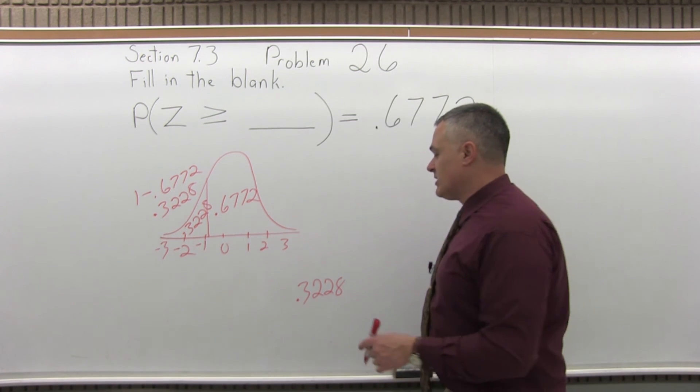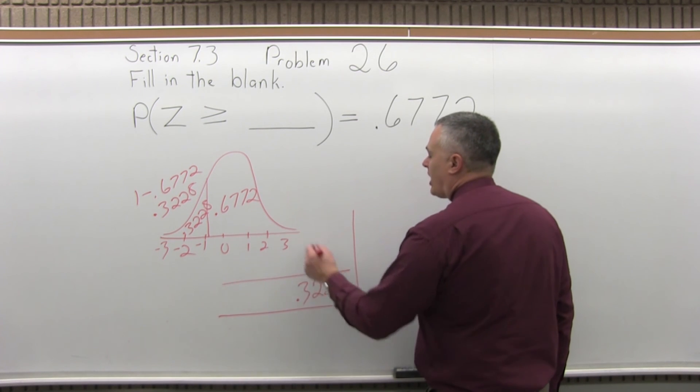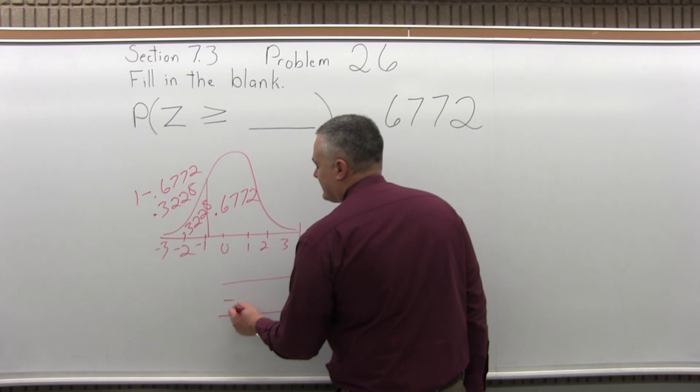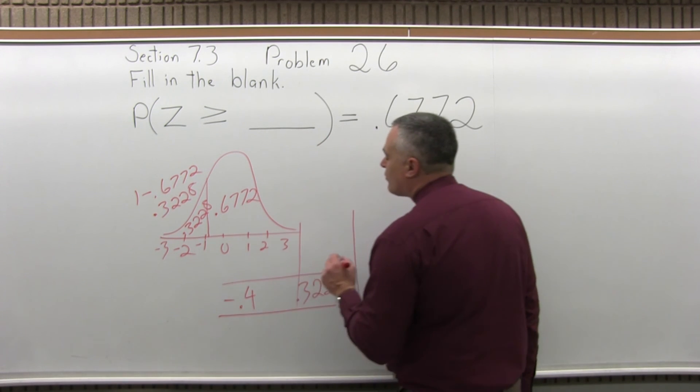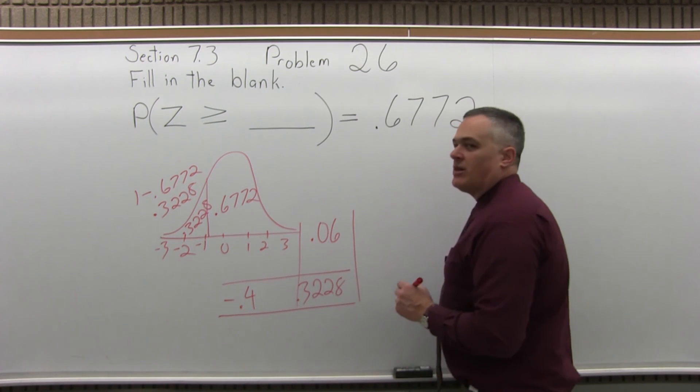When you do, and you'll find it in the middle of the chart, you want to see what row and what column the 0.3228 is in. And when you find it, you'll see it's in the negative 0.4 row and the 0.06 column.